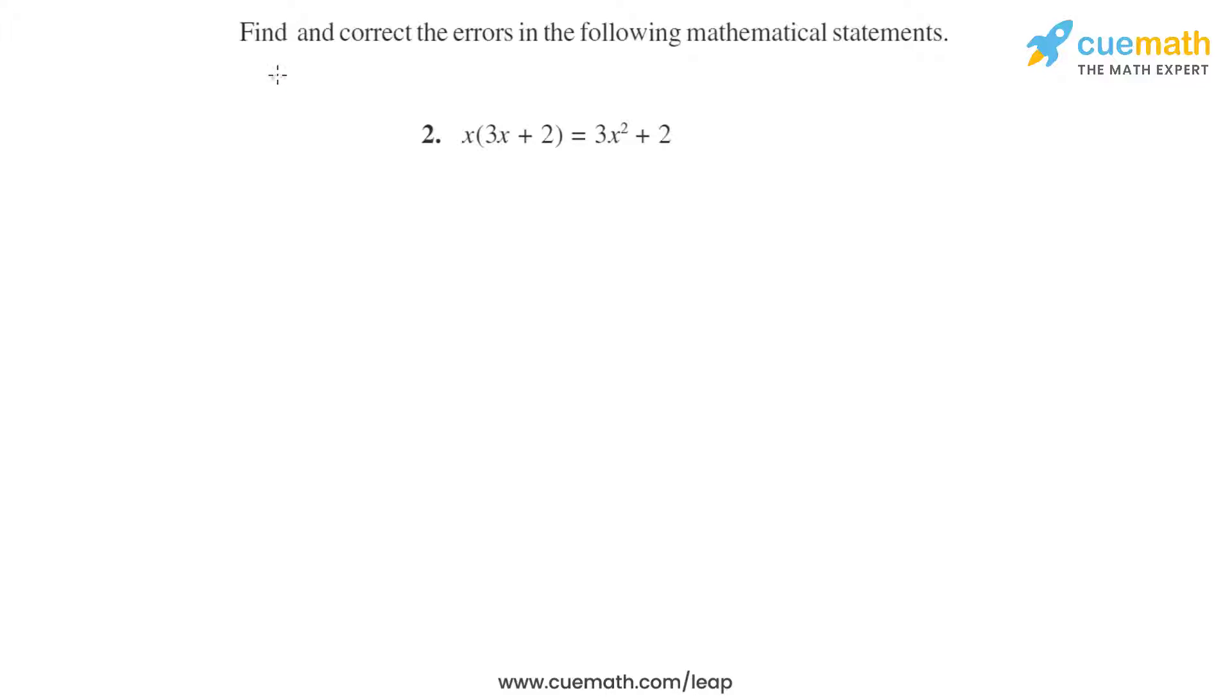In the second question, the same instructions: find and correct the errors. So we have to identify the error and correct it. x times 3x plus 2 equals 3x squared plus 2. So whenever we have a term outside the bracket, we have to multiply that term with all the terms inside the bracket.